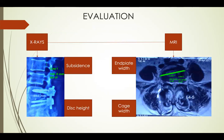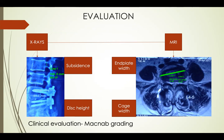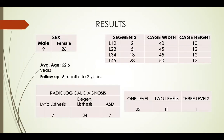Evaluation was based on X-rays and MRIs. X-rays were used for KTH subsidence and disc height increase, whereas end plate width and cage width were measured on the axial sections of the MRI scan. Clinical evaluation was done on MACNAB grading.